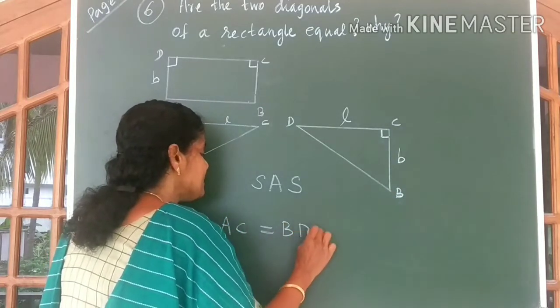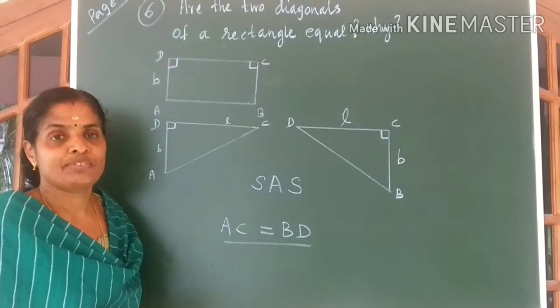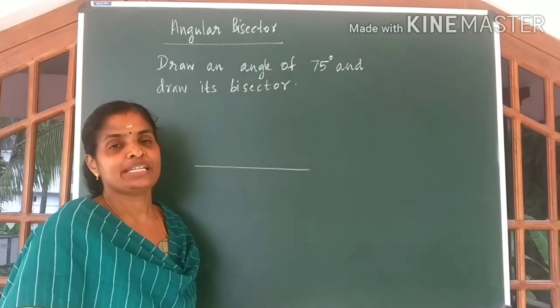So we can say AC is equal to DB which is the proof of the given question. Clear? Come to the next question, children.